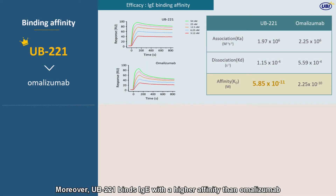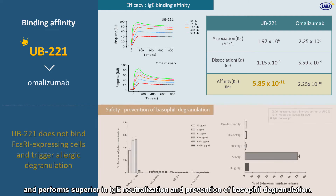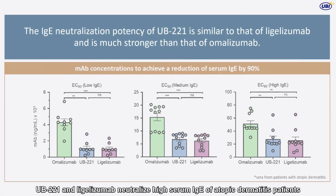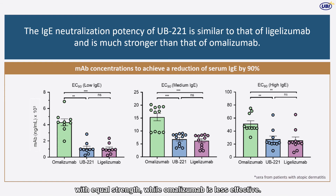Moreover, UB221 binds IgE with higher affinity than omalizumab and performs superiorly in IgE neutralization and prevention of basophil degranulation. UB221 and legilizumab neutralize higher serum IgE of atopic dermatitis patients with equal strength, while omalizumab is less effective.